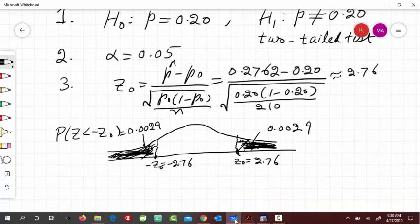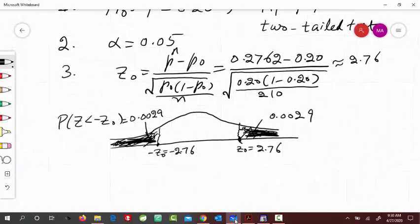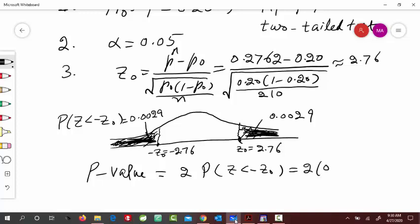Next p-value would be sum of the area, or twice of the one of the area, P(z < -2.76), that is twice of 0.0029. So that's equal to 0.0058. So this is your p-value.